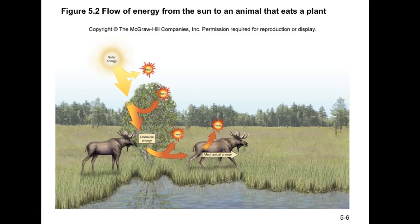We can see the relationship of taking solar energy — one form being photosynthesis — where we lose some heat. Autotrophs are eaten by heterotrophs, such as a moose, and there is an energy conversion there. This illustrates both the first and second laws of thermodynamics and the relationship between autotrophs and heterotrophs, which we'll see in photosynthesis and cellular respiration.